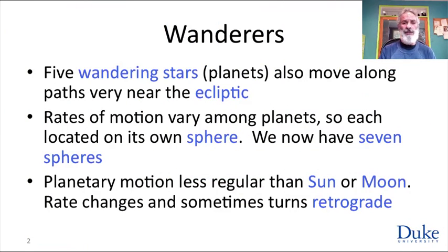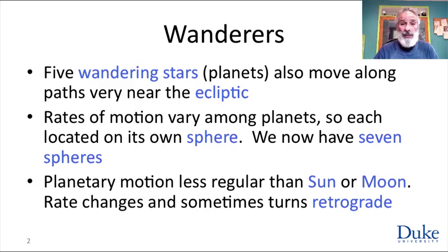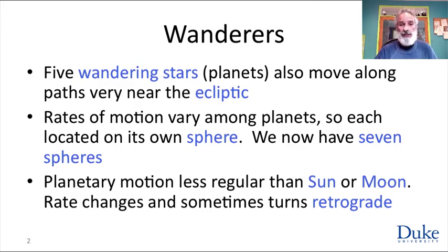We'll start with the problem we found. Aristotle would have been perfectly aware that there are five planets. 'Planets' derives from the word for 'wandering' because these were very bright stars. The five were Mercury, Venus, Mars, Jupiter, and Saturn. As we saw in our image, they follow paths very near to the ecliptic, and they move along the ecliptic. So that means we need planetary spheres in addition to the lunar and solar and celestial spheres that we already have.